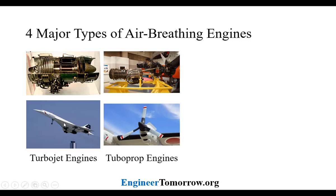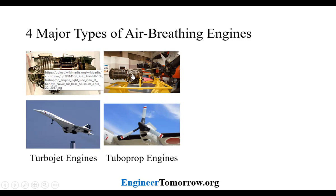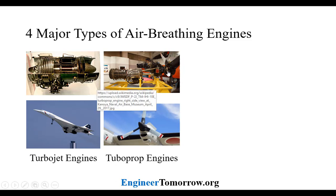The next one is the turboprop engine. To think of it simply, it's basically a turbojet engine which is attached to a reduction gearbox through a shaft. That reduction gearbox moves a giant propeller at a certain speed, which allows the aircraft to move through the air. By using the propeller, you move more air, and it allows you to move through the air more efficiently at lower speeds.